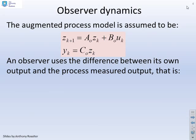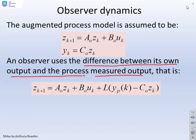Now an observer is corrected by using the difference between its own output and the process measured output. So in other words, what we do is we add this correction term, you can see there, which basically takes the process measurement YP and compares it with the observer output, which is C0 times ZK.